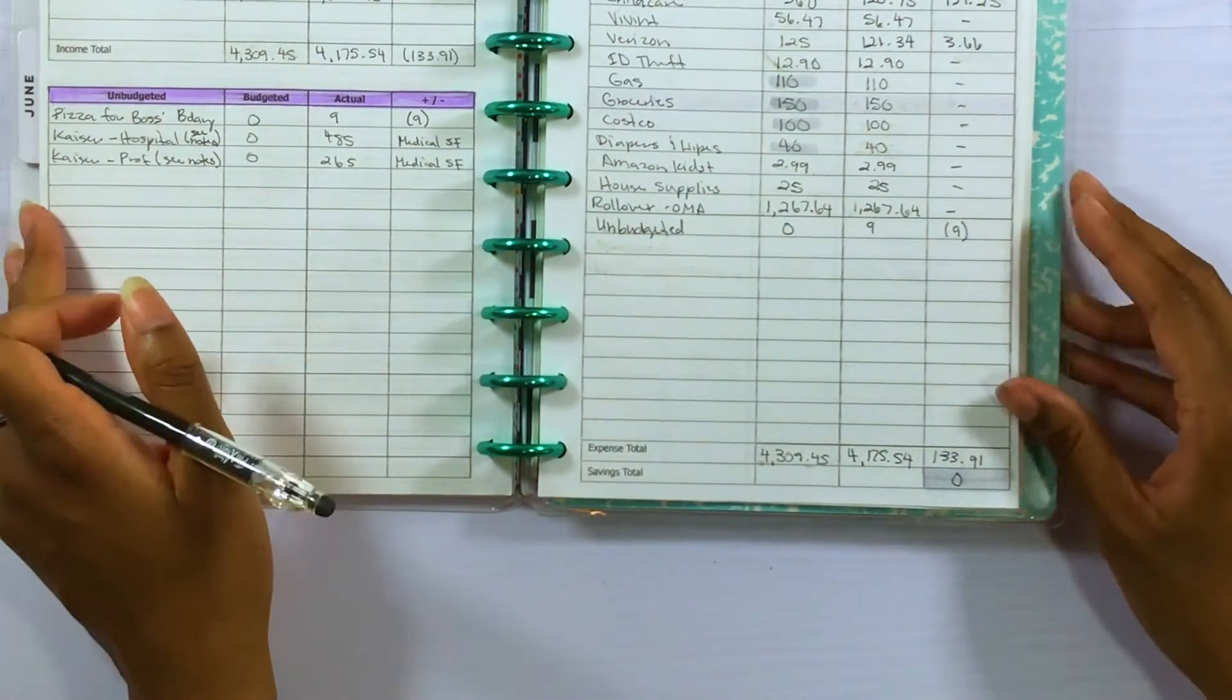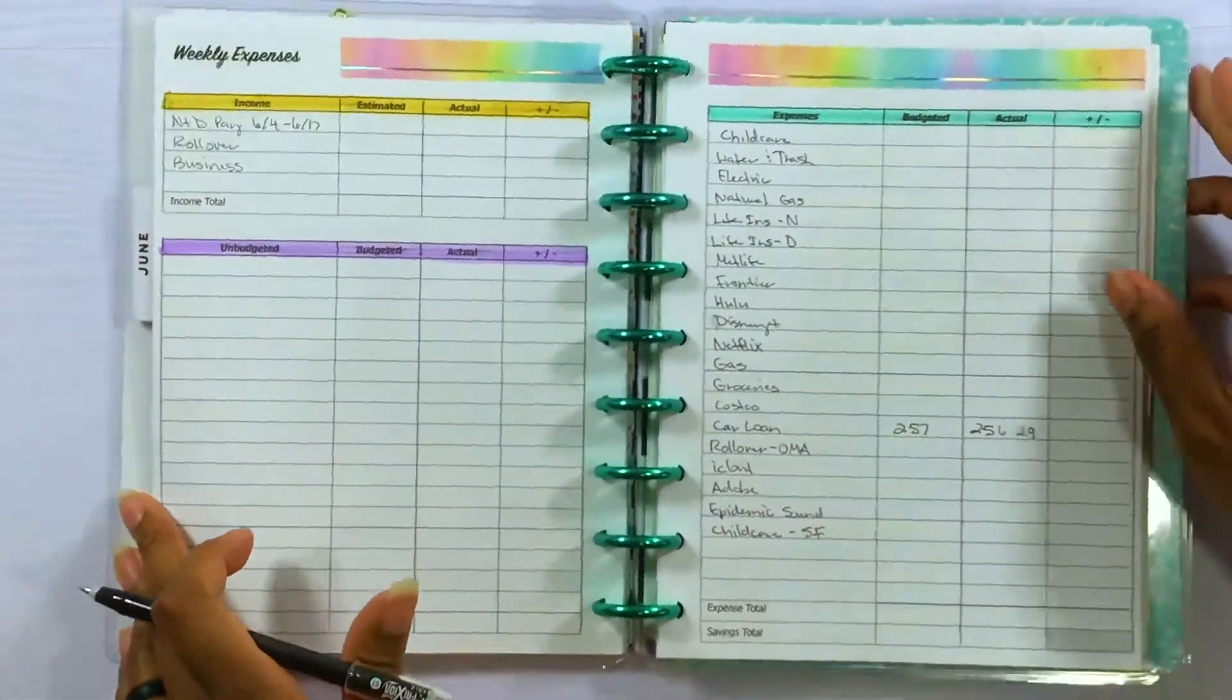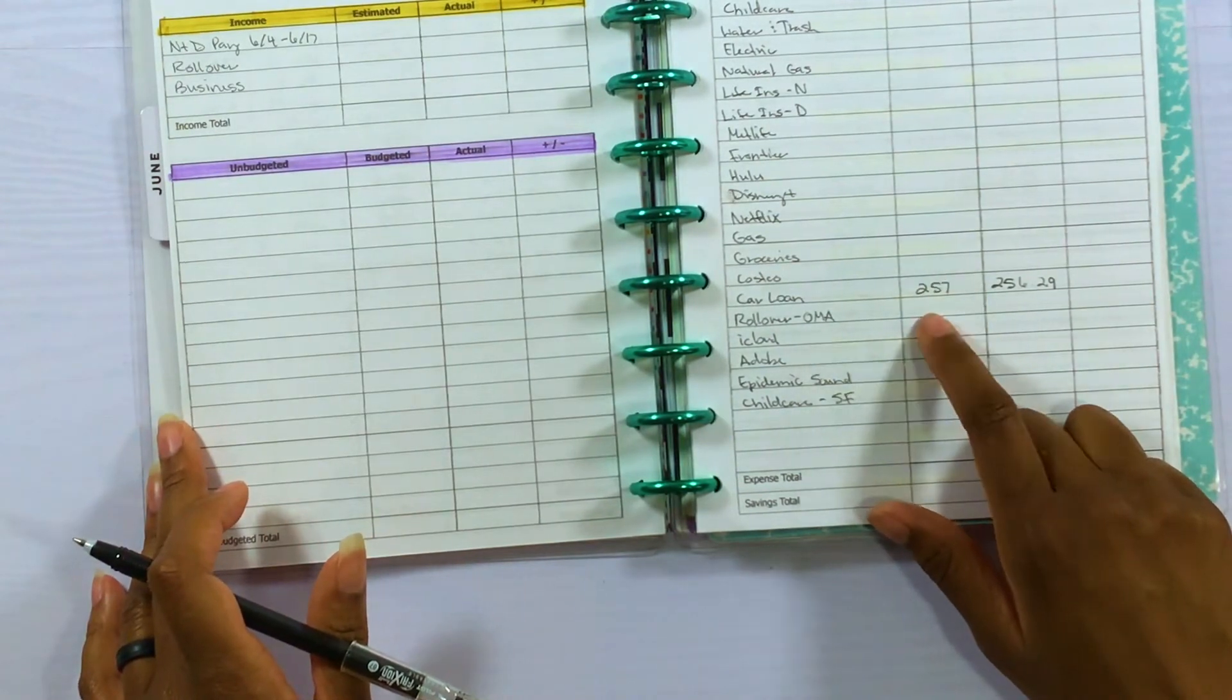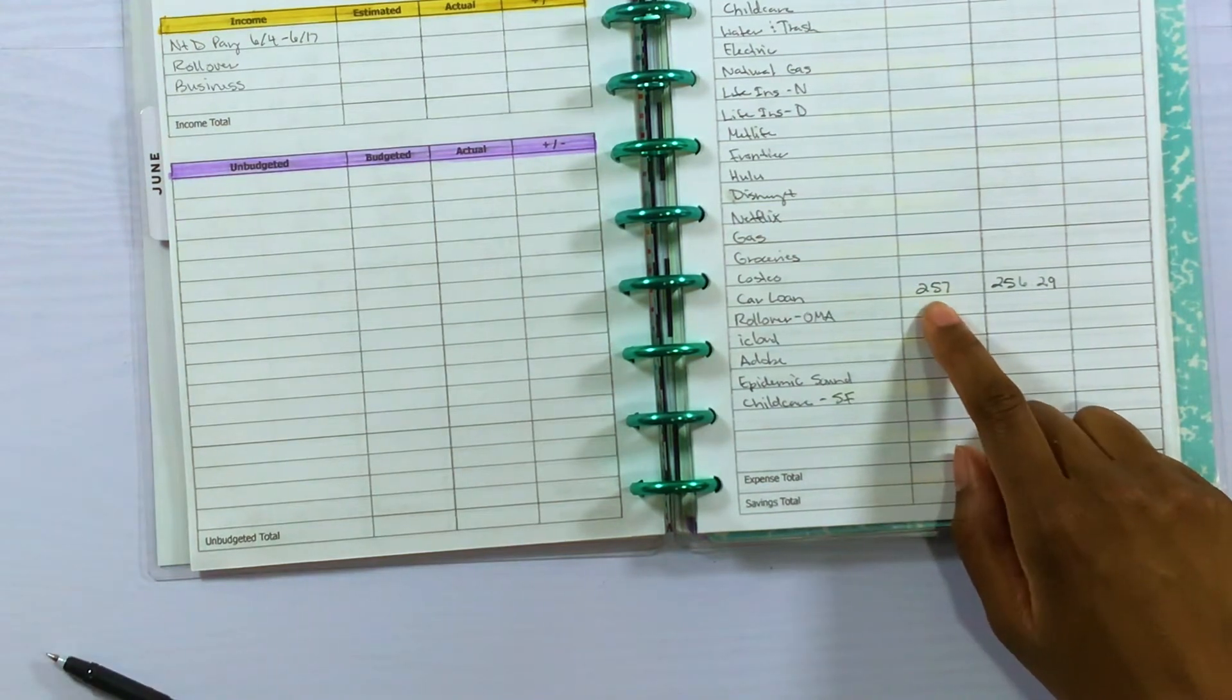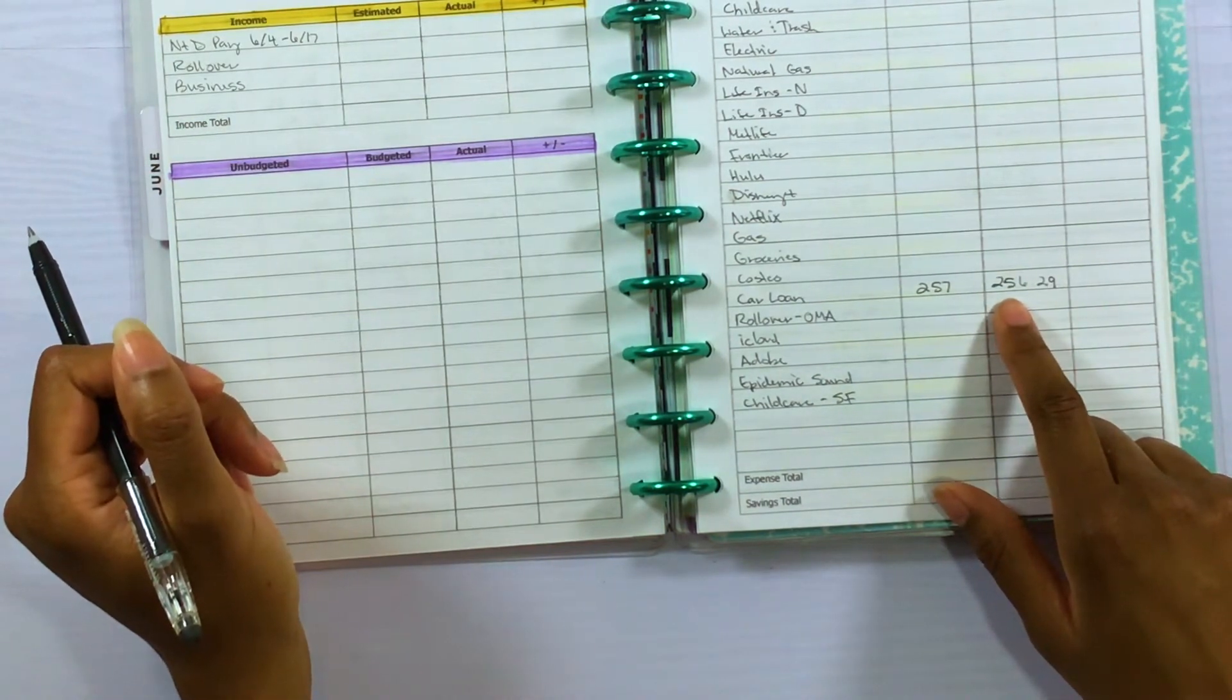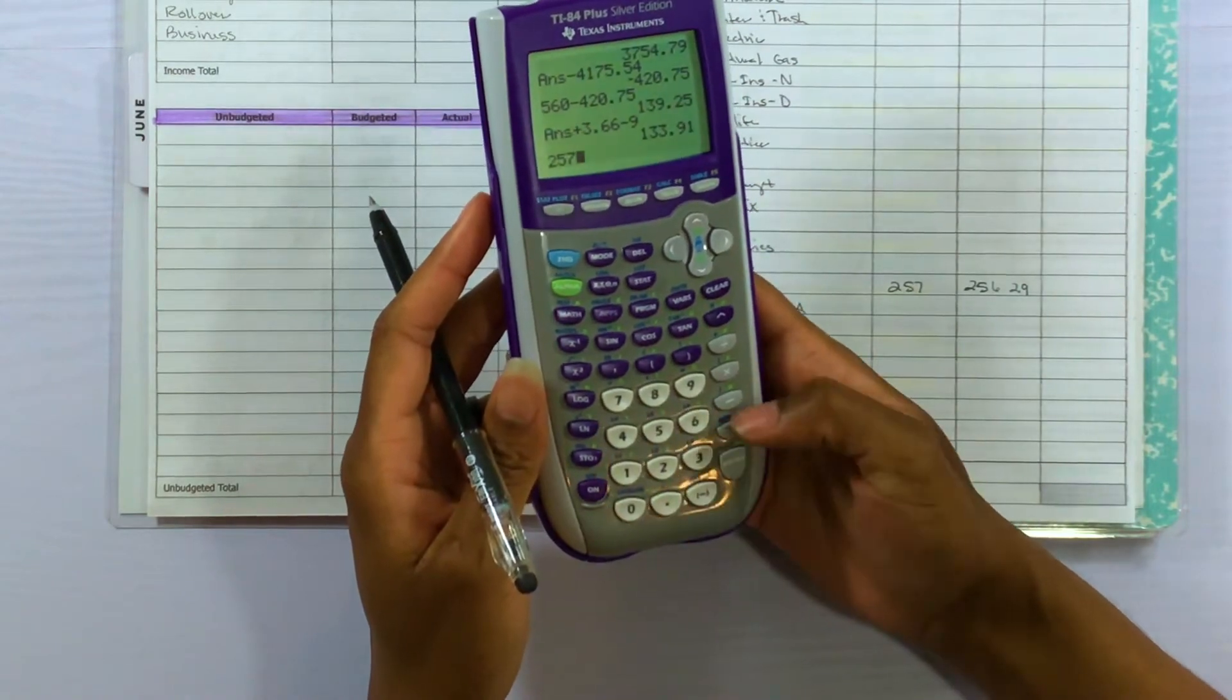So that is how we are going to close out budget number one. So let's go ahead and set up budget number two. I already wrote in the expenses, the name of the expenses, and then I did have to go ahead and set up our new car loan which just started this month in June. So I went ahead and set that up online and then set it up for auto pay. So that is going to be $256.29 every month.